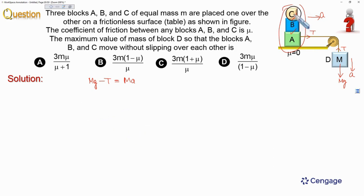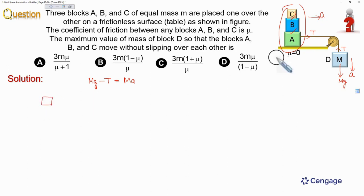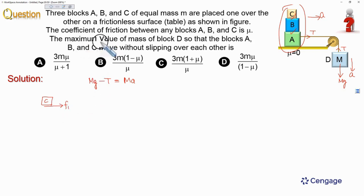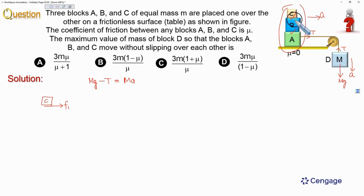Now consider the free body diagram of block C. This block is moving in the rightward direction. Friction is responsible for the motion of this block, so friction force on block C should act in the forward direction. We call this friction F1. Since we want the maximum possible mass of block D, friction between blocks should be considered at its maximum value.